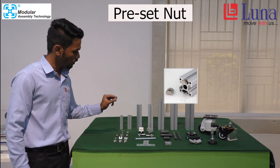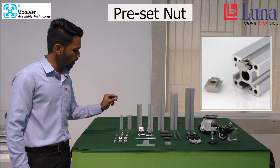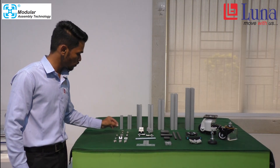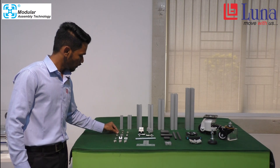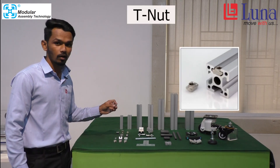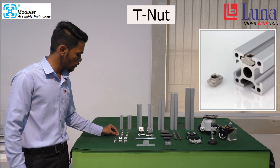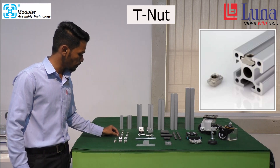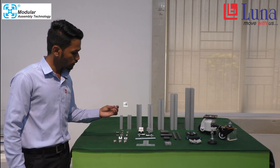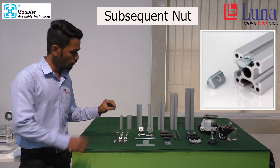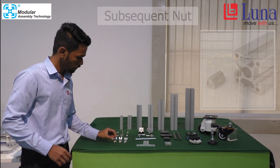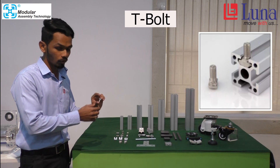In fastening elements, the first is the preset nut, available in M6 and M8 sizes. The second is the T-nut, also called a hammer nut, also available in M6 and M8. The third is the subsequent nut, which comes with a leaf, and the fourth is the T-bolt.